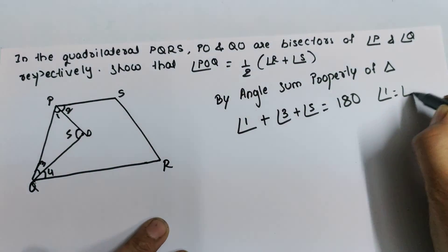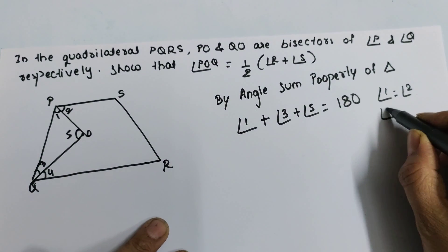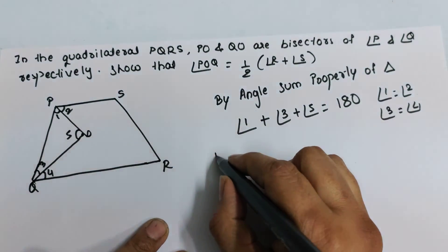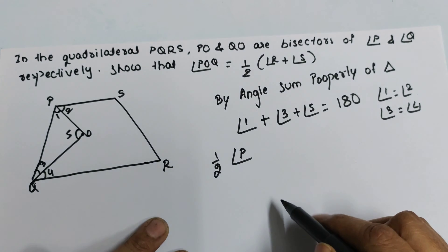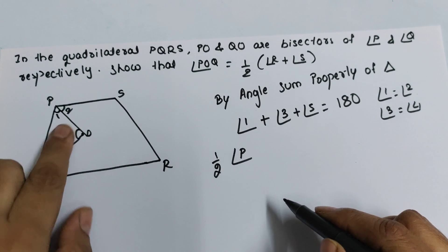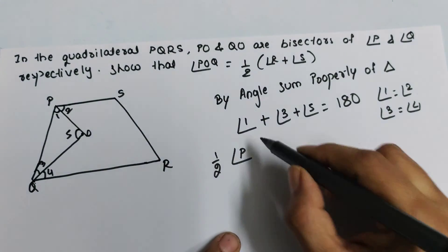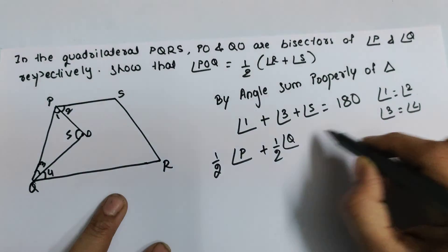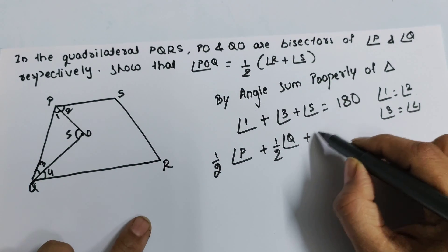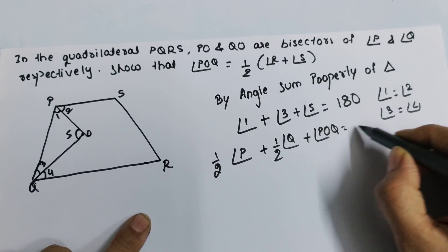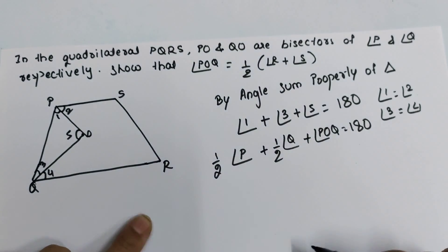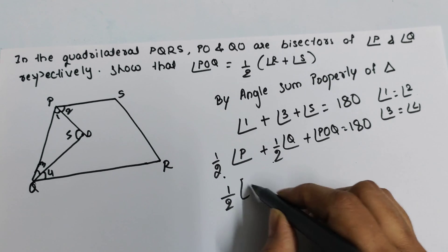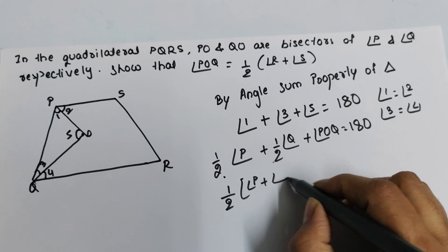Since PO is a bisector, angle one equals angle two, so angle one is half of angle P. Since QO is a bisector, angle three equals angle four, so angle three is half of angle Q. Substituting, we get half of angle P plus half of angle Q plus angle POQ equals 180 degrees.